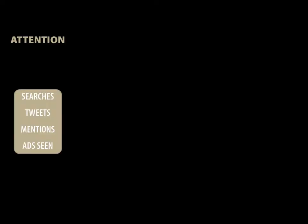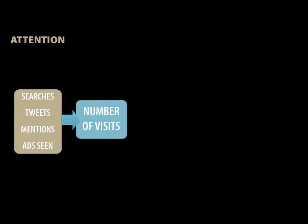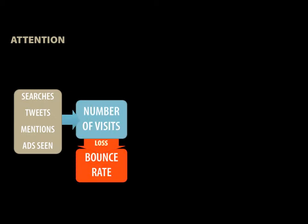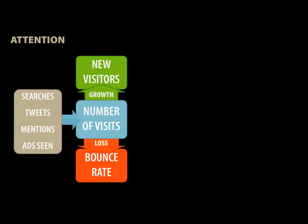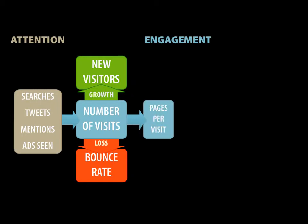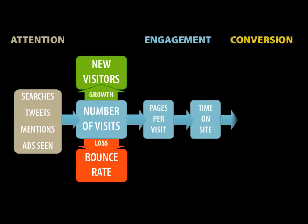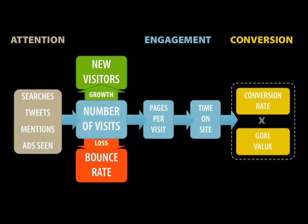At a very simple level, things happen on the internet — searches, tweets, and so on. That drives some traffic to your site, and some of those people leave immediately — that's called bouncing. Some of those people stick around and they're new users, and that's called growth. Over time, those visitors consume a number of pages on your site, spend some time, and hopefully eventually do something you want, which is buying, signing up, or contributing content. This is the simplest possible model for web analytics.